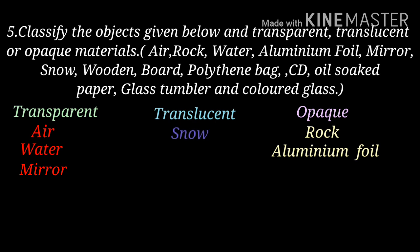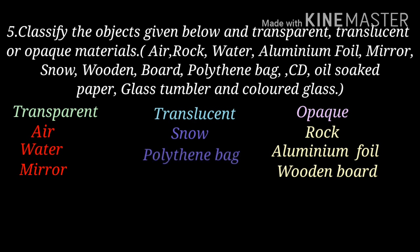Next: wooden board — it doesn't allow the light to pass through, so it comes under opaque material. Next: polythene bag — not clear images, so it comes under translucent. Next: CD — CD doesn't allow the light to pass through it, so it comes under opaque material. Oil-soaked paper — it comes under translucent material; a blurred image appears through it.